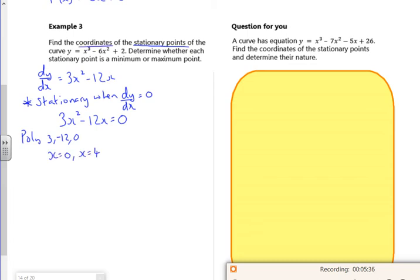Now, it wants the coordinates. So, if I sub in 0, I get 2 out. So, y is 2. So, that gives me a coordinate of 0, 2. Checking on the answers.